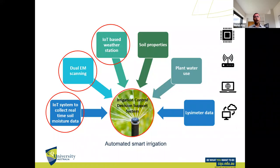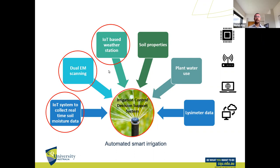The idea of this project is to automate the system. We have components to automate and make decisions. The main points are live soil moisture data fed to the system, including local weather station data. We also have soil properties, plant water use, and lysimeter data. I will mainly focus on the IoT system and IoT-based weather station, and finally how we use that data with AI to automate.